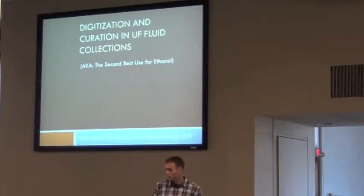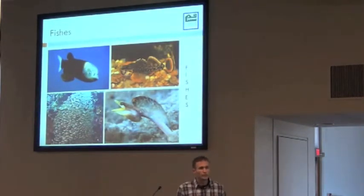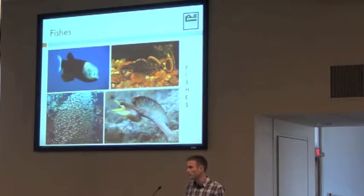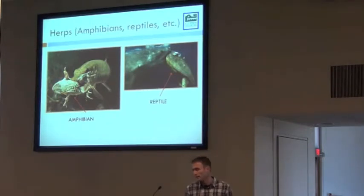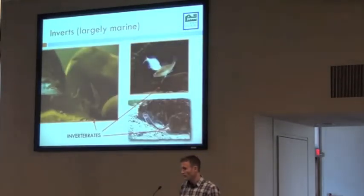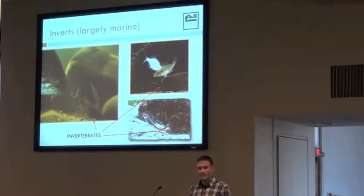So the three groups of organisms are fishes, which I'm sure all of you learned in grade school is the dominant form of vertebrate life on the planet. Herps, which you probably also learned at that time, are nutritious prey for fishes. And inverts, which are both crunchy and nutritious prey for fishes, and also make great habitat and nice pictures.